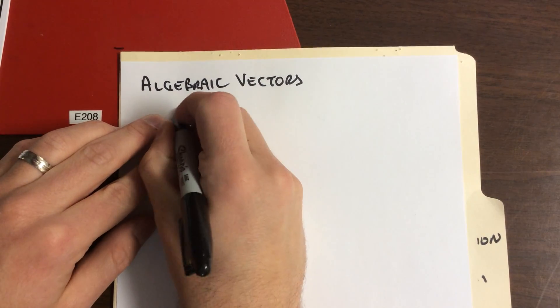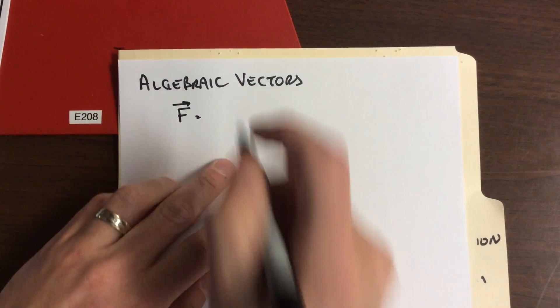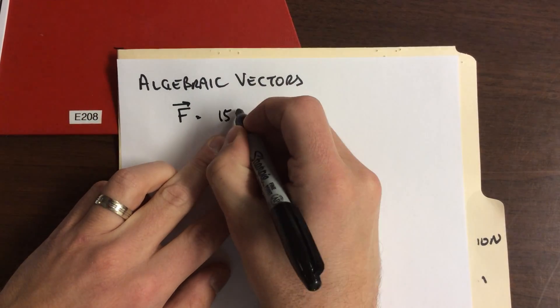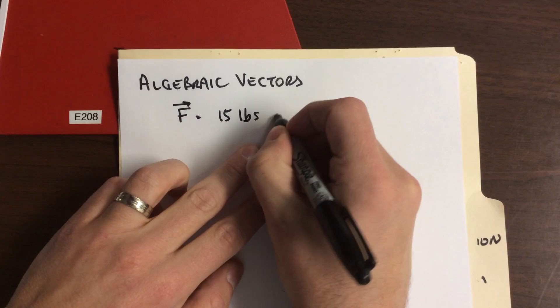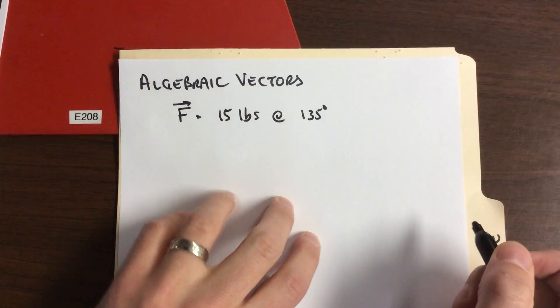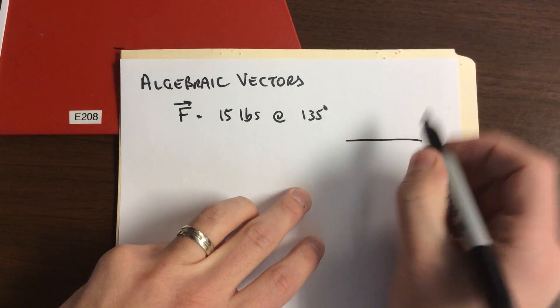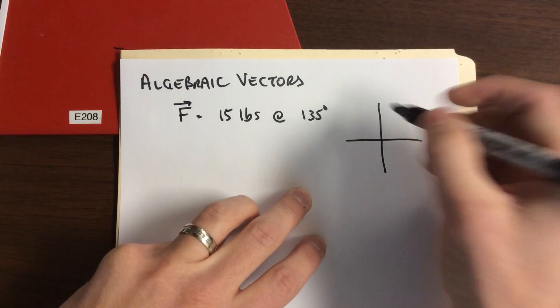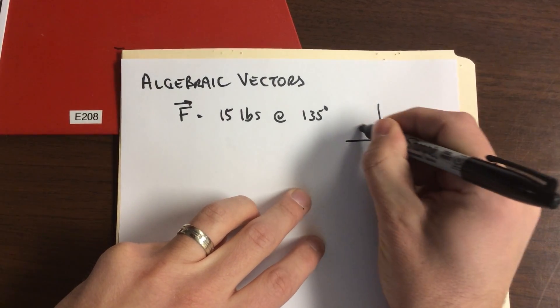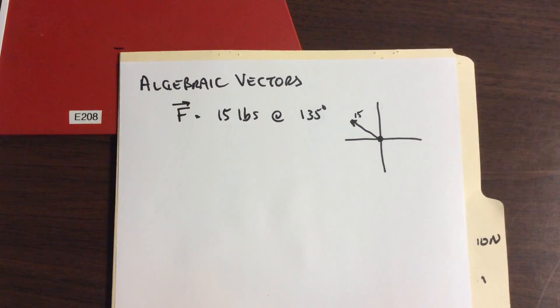Yesterday we looked at saying something like we might have a force vector that's applied. We push with 15 pounds of force at an angle of 135 degrees. We've got numbers in there. There's our algebraic representation.